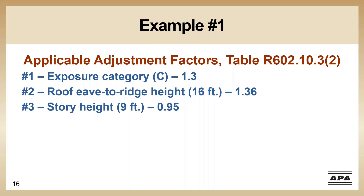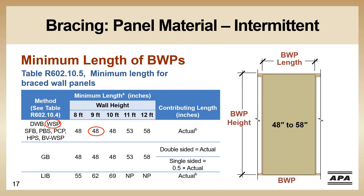The next step is to determine the minimum length of brace wall panels, which depends on your method and wall height. In our case we are using method wood structural panel. The minimum length for a qualified brace wall panel with wood structural panel is a baseline of 48 inches.